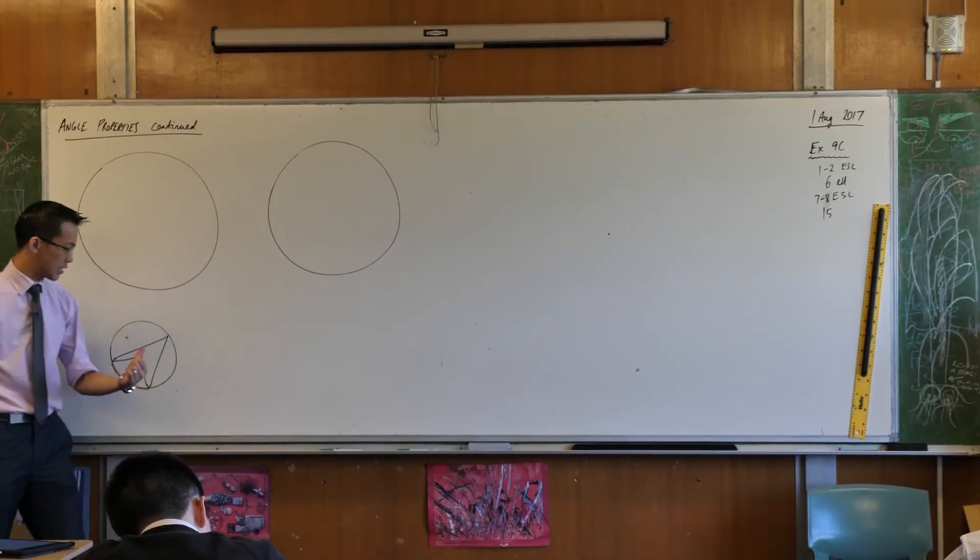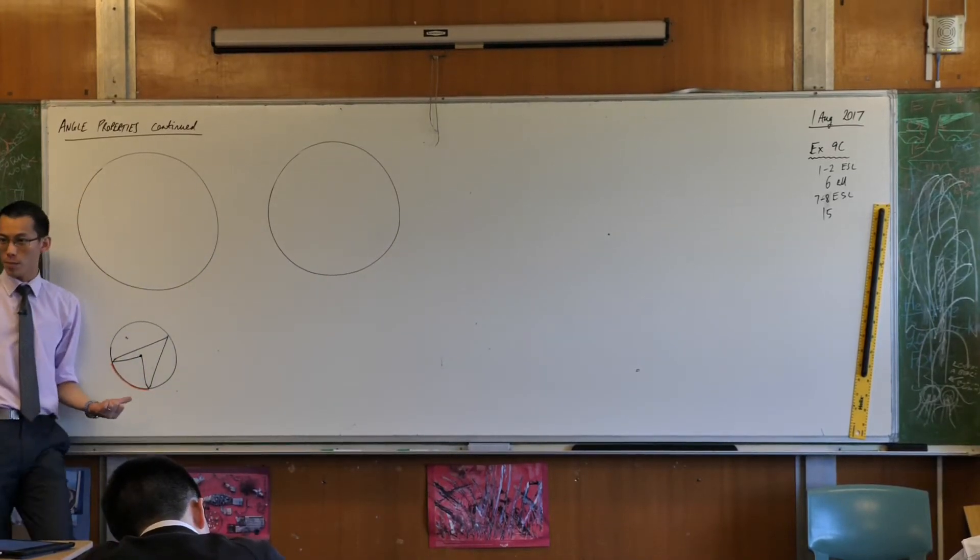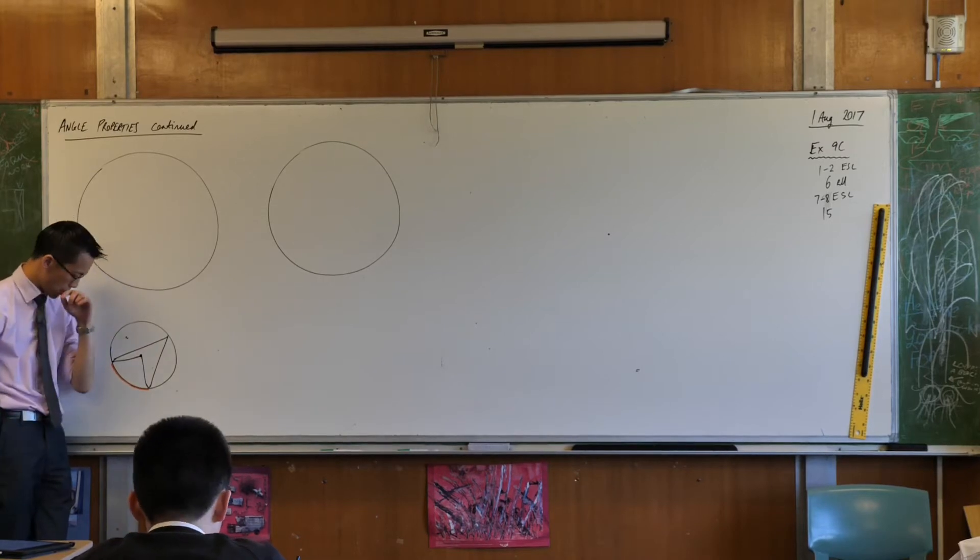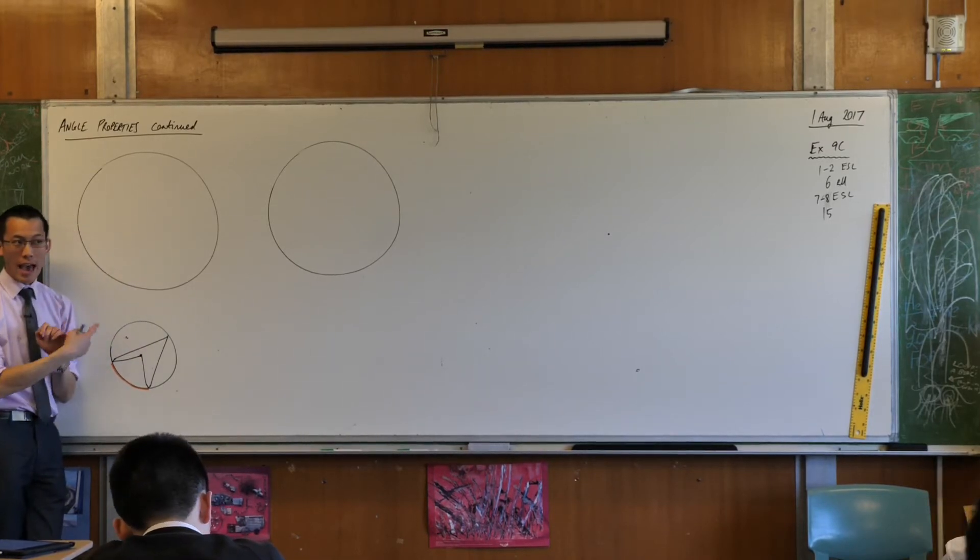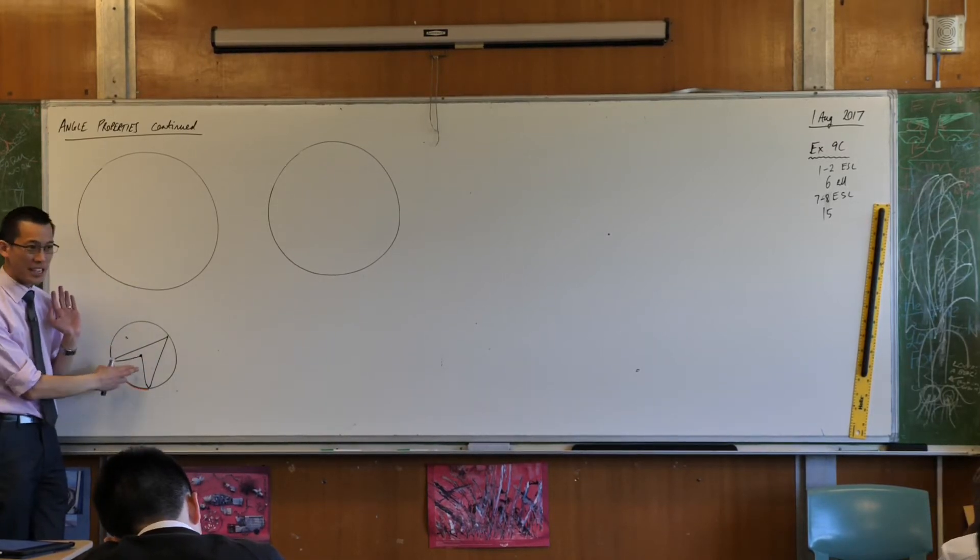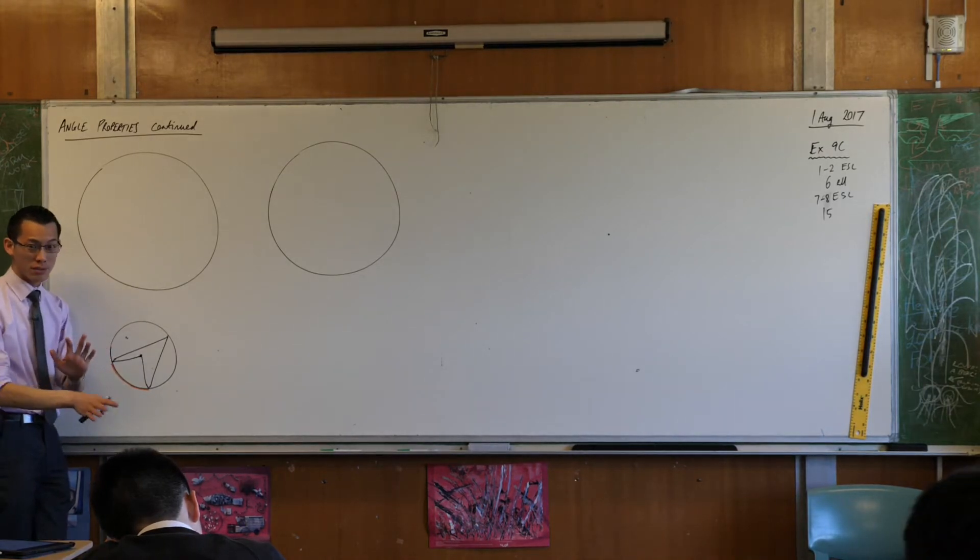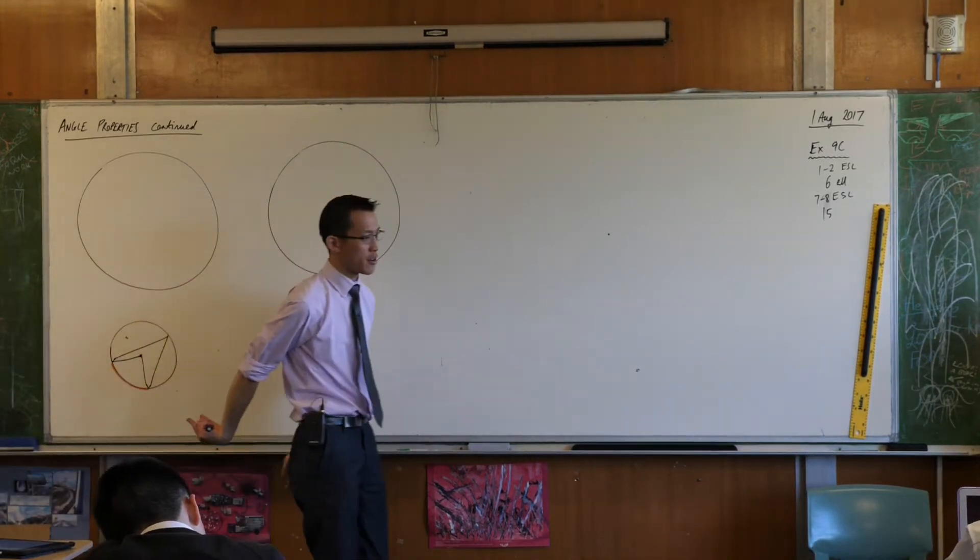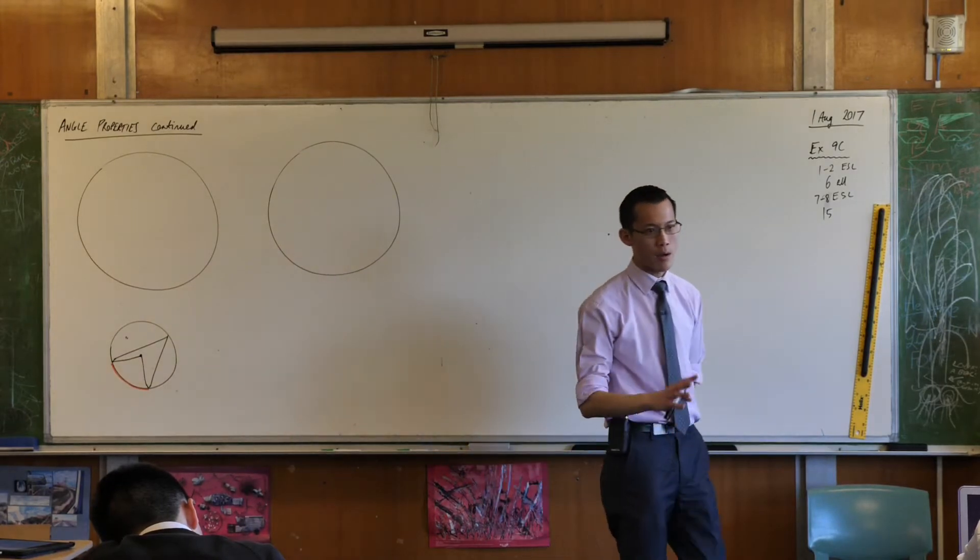You might recall yesterday we had a look at a diagram like this. You do not need to redraw this because you should already have this in your book. I want you to have a look carefully at what this looks like and see if you remember. Don't look at your book, see if you remember what this is talking about. There are two angles in here that are important. Where are they?